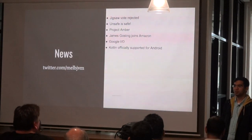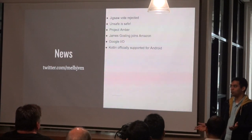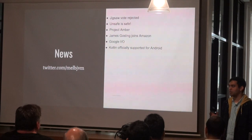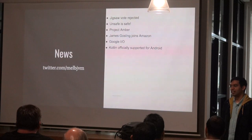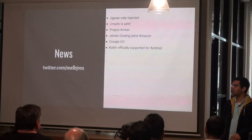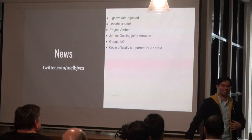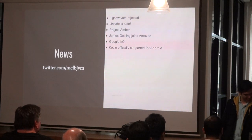In other news, sun.misc.Unsafe is actually going to be safe in Java 9 — for now, though who knows what they'll do in Java 10. There was basically a lot of talk, especially for quite a lot of libraries that use it, and moving away from it would have broken the availability of some really cool features on the JVM. So they've kept it in.